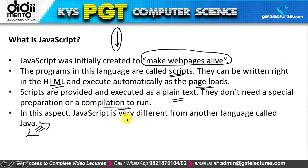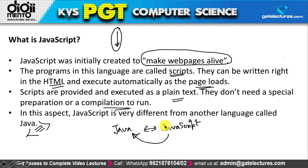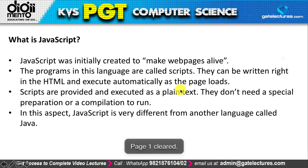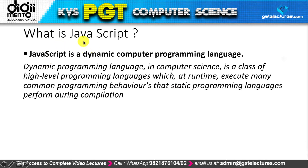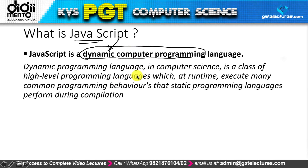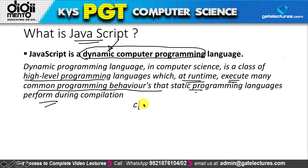JavaScript is a scripting language — never confuse JavaScript and Java as being the same. JavaScript was not derived from Java. It is actually a dynamic computer programming language. In computer science, a dynamic programming language is a class of high-level programming language which at runtime executes many common programming behaviors that static programming languages perform during compilation.